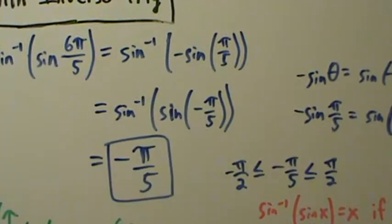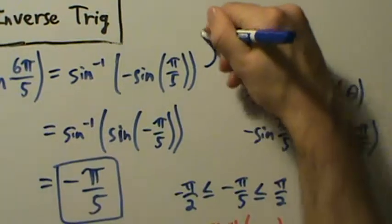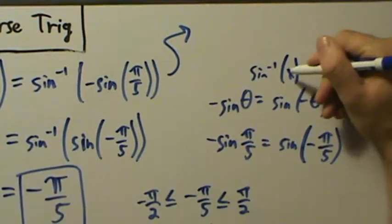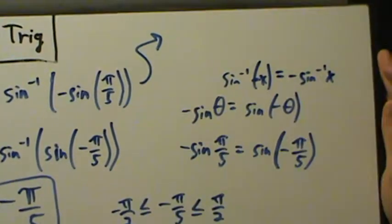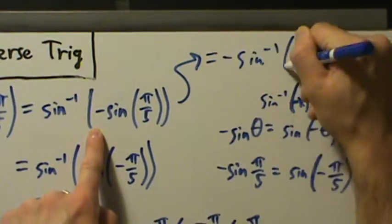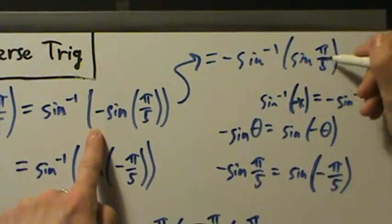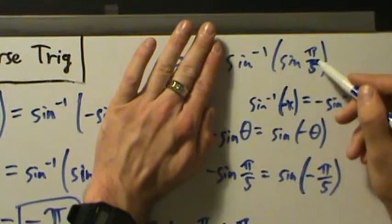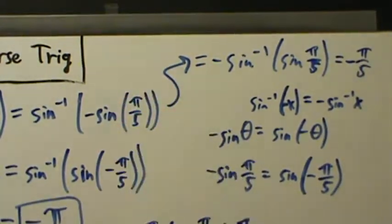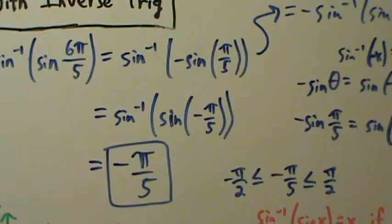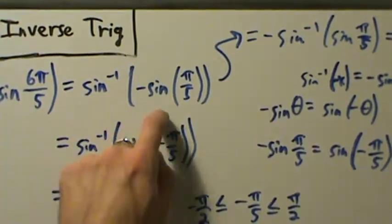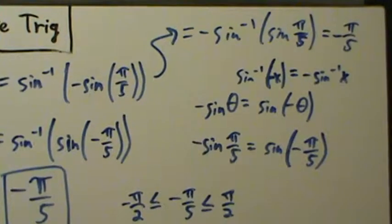There's another approach we could have used. Instead of using the fact that sine is an odd function, we could have used the fact that inverse sine is also an odd function — meaning inverse sine of negative x equals negative inverse sine of x. So from inverse sine of negative sine of π over 5, we could have written negative inverse sine of sine of π over 5. Since π over 5 is between negative π over 2 and positive π over 2, we can cancel the inner sine and inverse sine, getting negative times π over 5, which is again negative π over 5. Both approaches rely on the fact that sine and inverse sine are both odd functions.